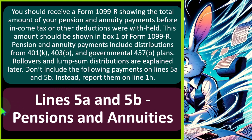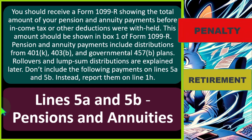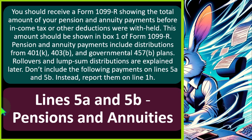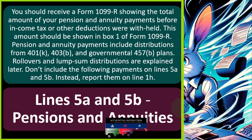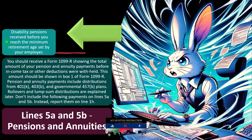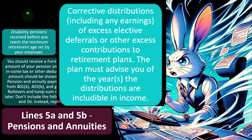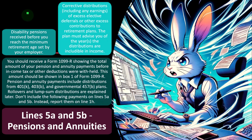Rollovers and lump sum distributions are explained later. Note that if you take money out before retirement, you may be subject to both taxes and a hefty penalty. When moving from one job to another, you should roll over the 401k or 403b plan so it's shown as a rollover on the tax form rather than a distribution. Don't include disability pensions received before reaching minimum retirement age or corrective distributions including earnings of excess elective deferrals on lines 5A and 5B — instead, report them on line 1H.